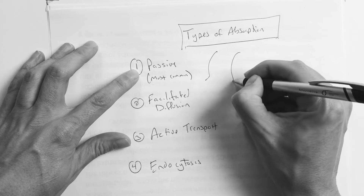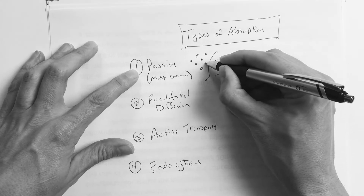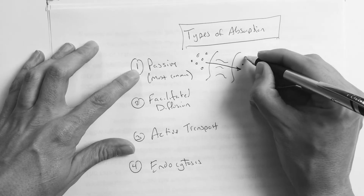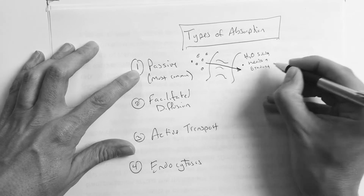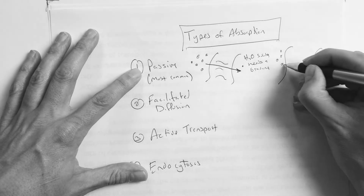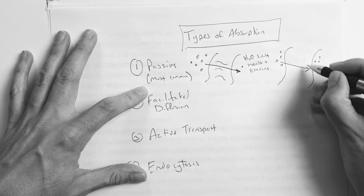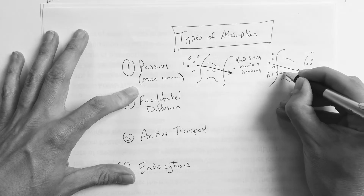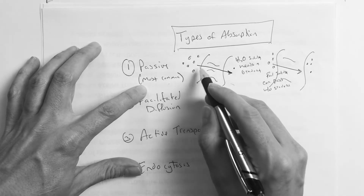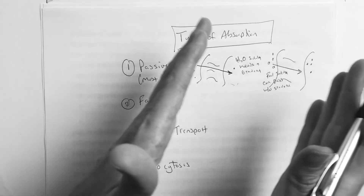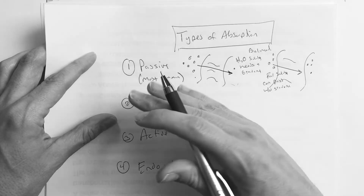Passive transport is the most common. It's based on the concentration gradient — it flows from high concentration to lower concentration. If a substance is water-soluble, it needs a gradient. If it's fat-soluble, it can pass without a gradient. Either way, passive diffusion requires no energy — it just flows and settles out until balanced.